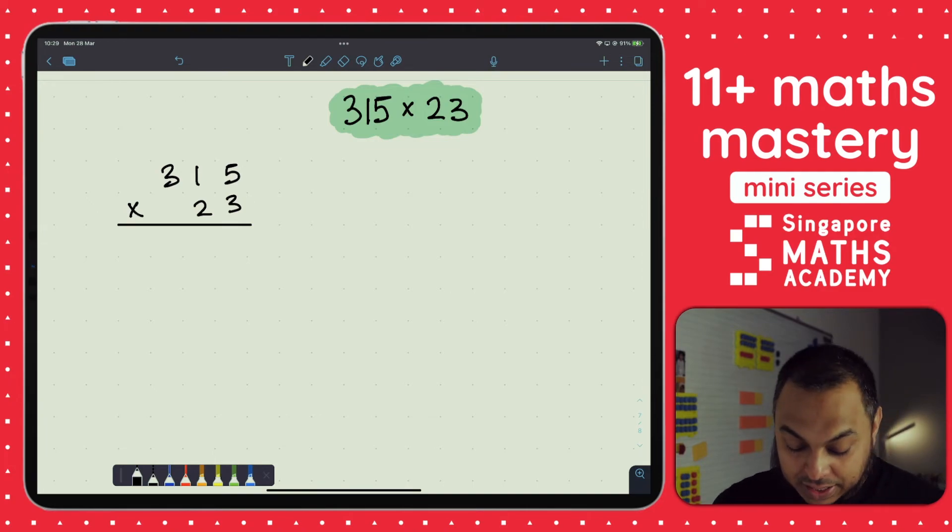So the first thing is we have this question 315 times 23. Typically what we like to do is we put the smaller number, which in this case is 23 or the two-digit number, on the bottom row and the larger three-digit number on the top row.